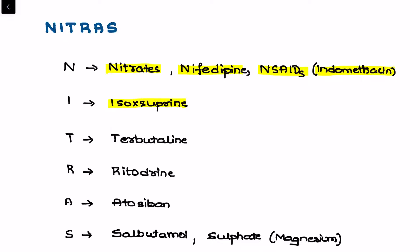I stands for isoxsuprine, T stands for terbutaline, R stands for ritodrine, and A stands for atosiban which is an oxytocin antagonist.